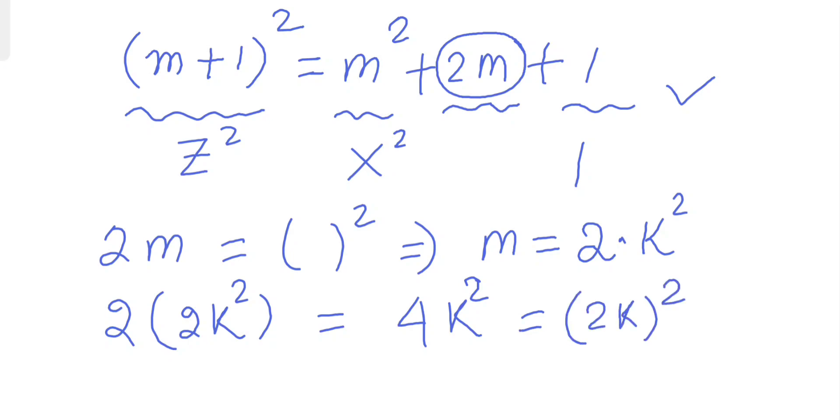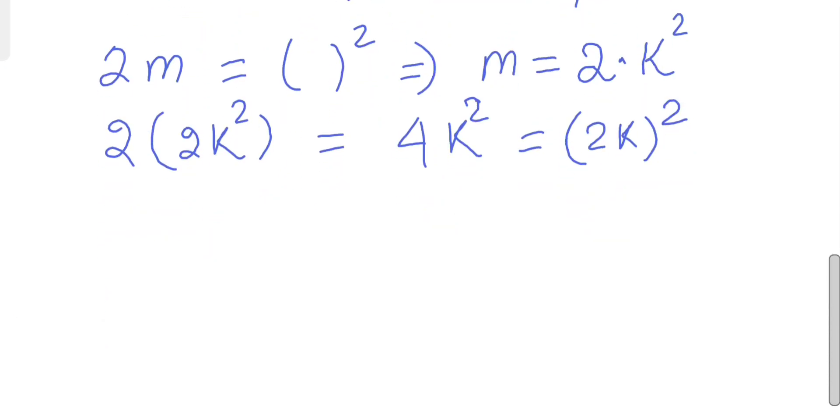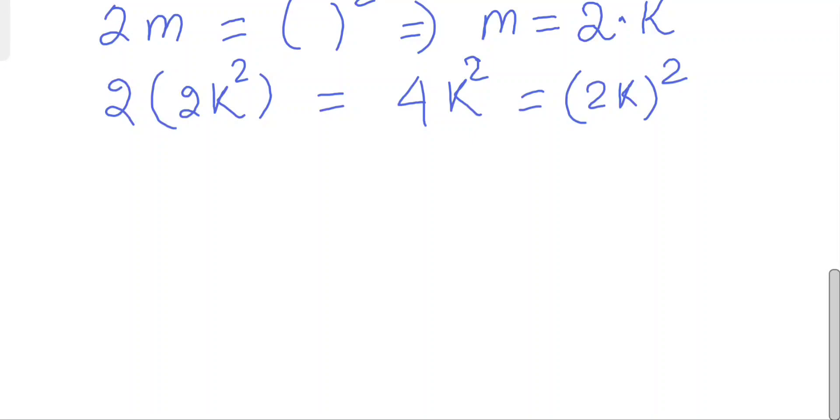We can write it like this. So it means we have to only change m, we have to replace 2k² instead of m only. So let's make it and see what happens.